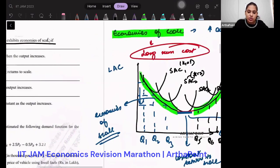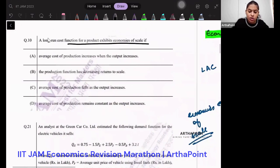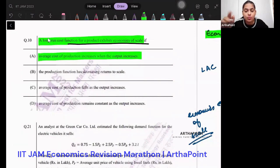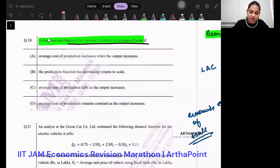So let's go back to this concept. This said a long run cost function for a product exhibits economies of scale, which means it is average cost of production increases when output increases. No, we want it to decrease as output increases. So the answer to this question should be the production function is decreasing returns to scale. No, no, it should be increasing returns to scale.